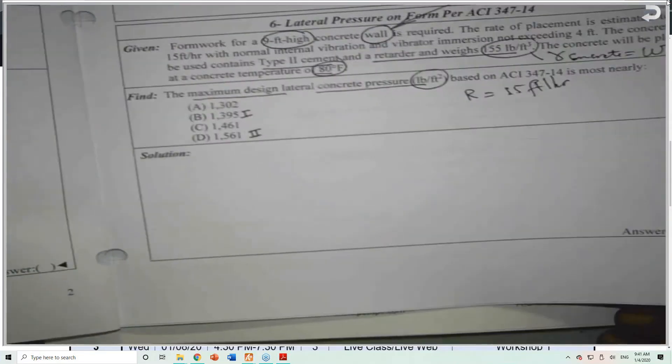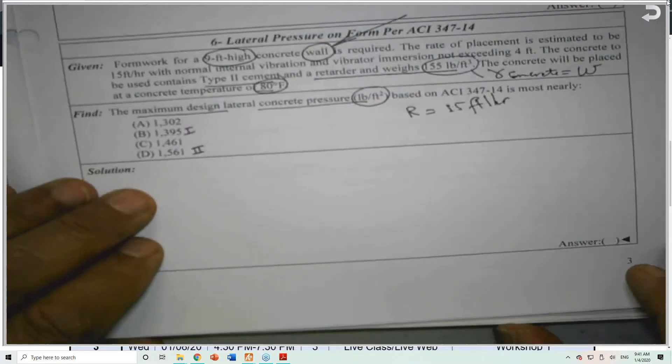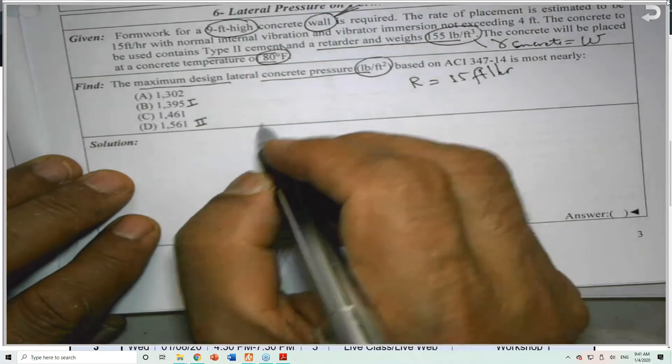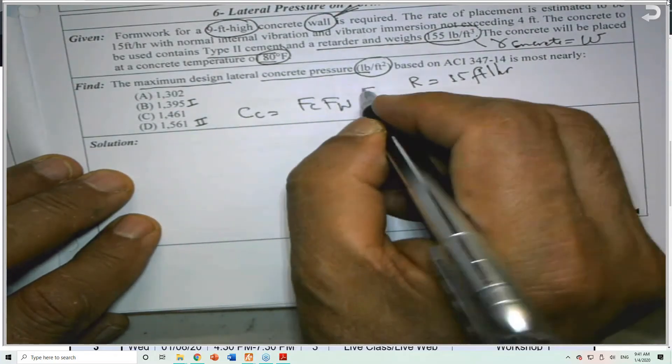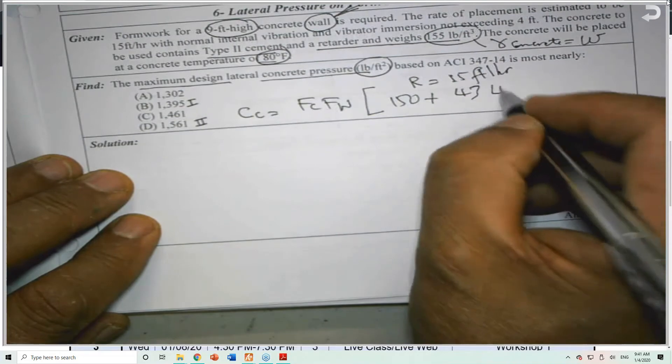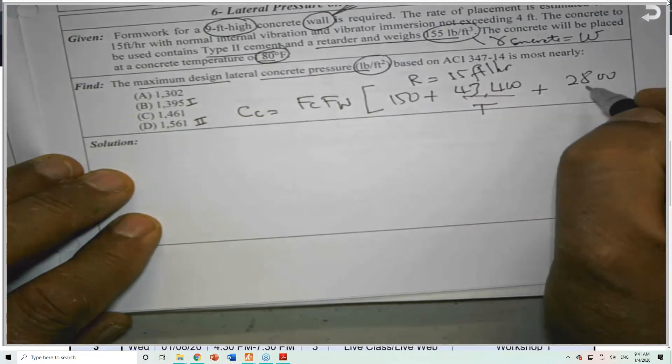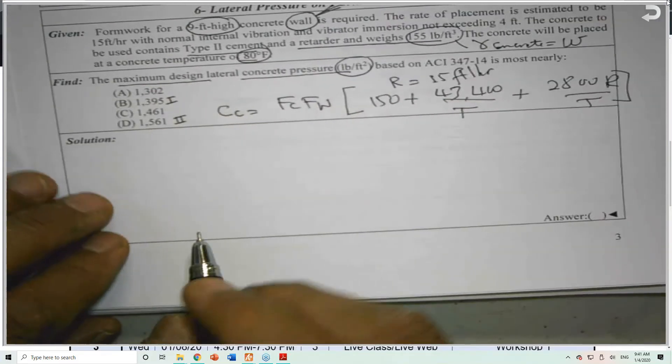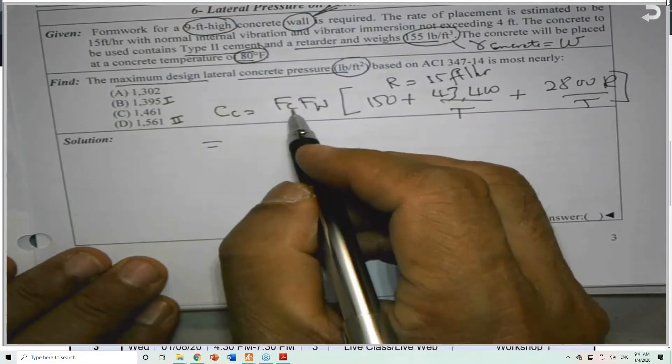Here, an empirical formula. They came up with the temperature and the rate and so on. So this is the equation. So empirical formulas you have to be careful because they have limitations. It's not mathematical, it's not differential equations. They are saying that Cc is equal to Fc times Fw times 150 plus 43,400 over T plus 2800 times R over T. And correct me if I'm wrong if I copy the equation wrong. So we can plug the numbers. Using the numbers here will give you a certain result. But what is Fc and Fw? One for the chemistry and for the weight.